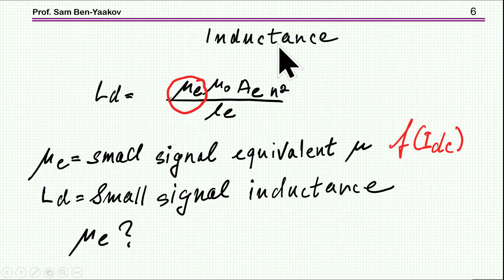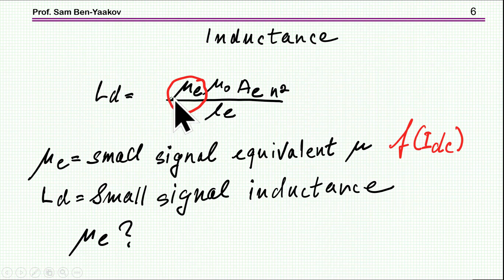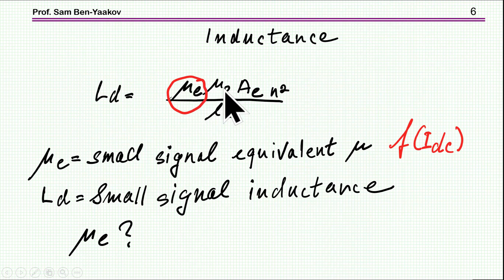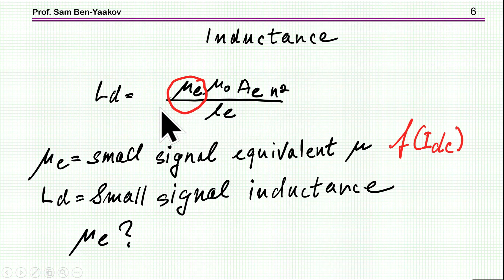The inductance of an inductor — specifically the differential or small-signal inductance — will be dependent on the relative total permeability, or equivalent permeability, the permeability at vacuum or air, the cross-section area of the core, N-squared, over the total magnetic path length. So this will be an expression for the differential, local, or small-signal inductance.